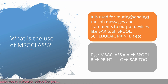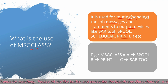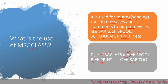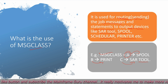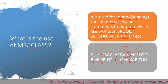What is the use of message class? It is used for routing the job message and statements to an output device — such as the SAR tool, spool, scheduler, or printer. For example, message class A might denote spool and B might denote print. The specific class codes vary by project — in one project Y might send data to SAR, in another T or X might be used. It depends on the project configuration.